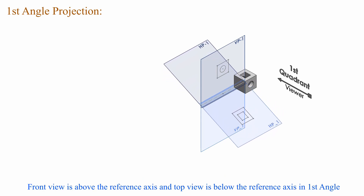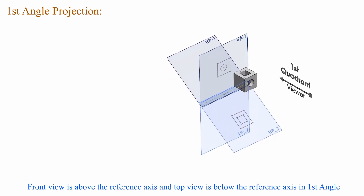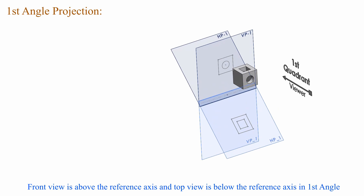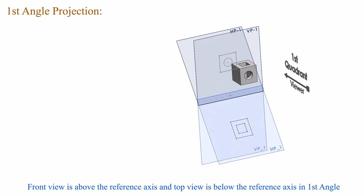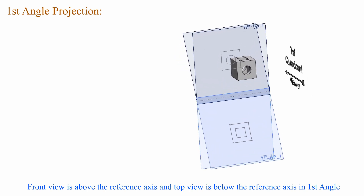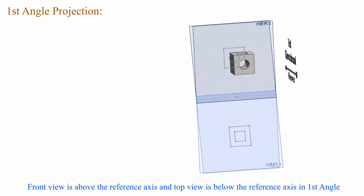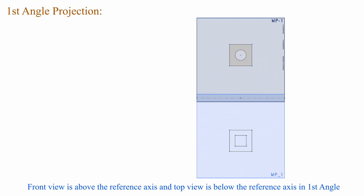In first angle projection, the front view is above the reference axis and the top view is below the reference axis.